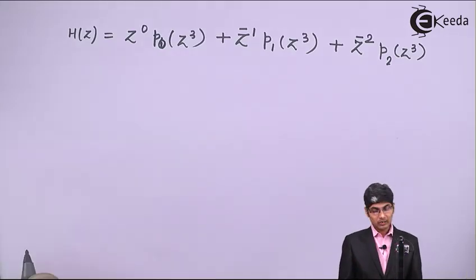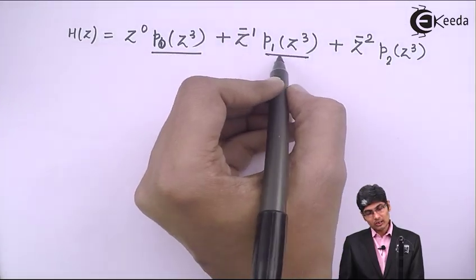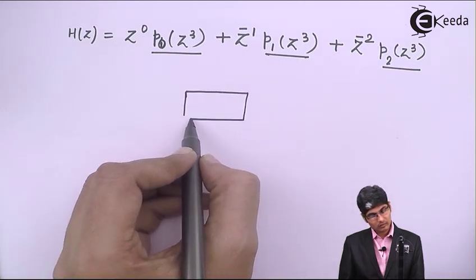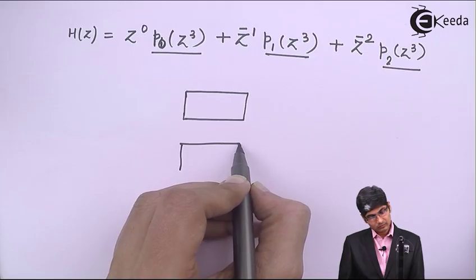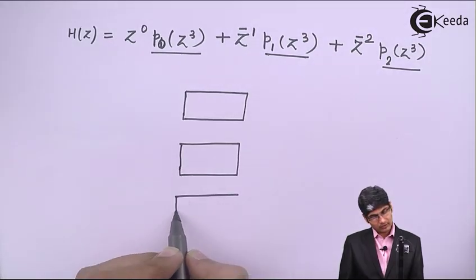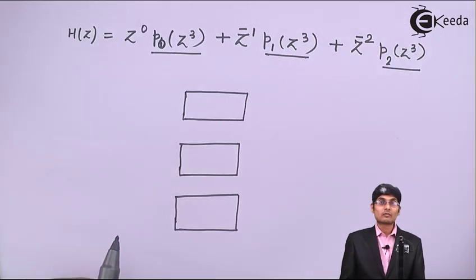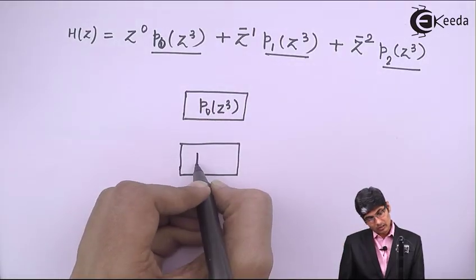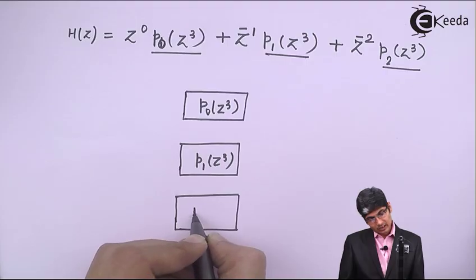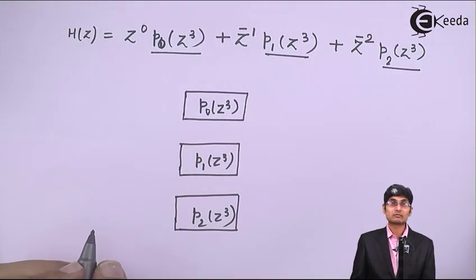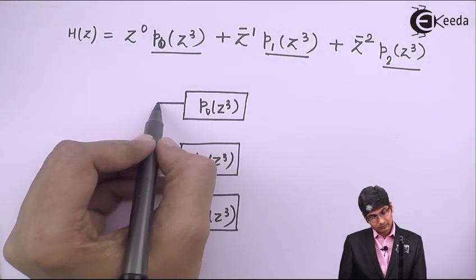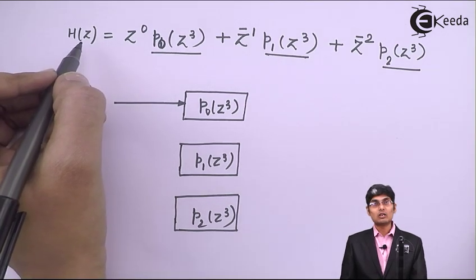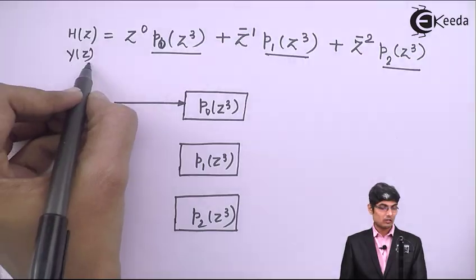So I have three polyphase polynomials: P0(z³), P1(z³), and P2(z³). These are the smaller structures. The input is given to each of these three polyphase components. We know that H(z) = Y(z) / X(z).